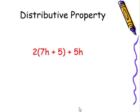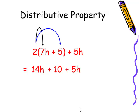You may wanna try it yourself. Two times seven H, which would give us 14H. Two times five, which would give us plus 10. And then just five H. We are not distributing two to five H, because it's not inside the parentheses. We just bring it down, plus five H.